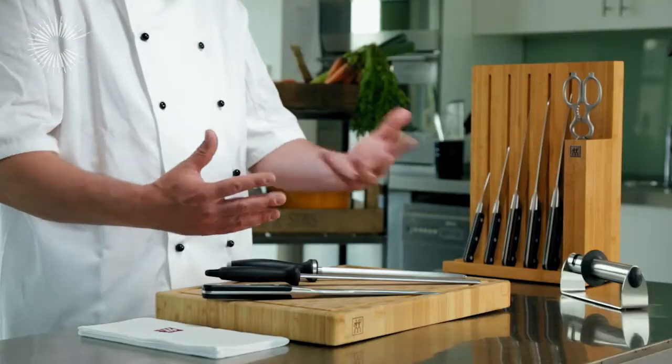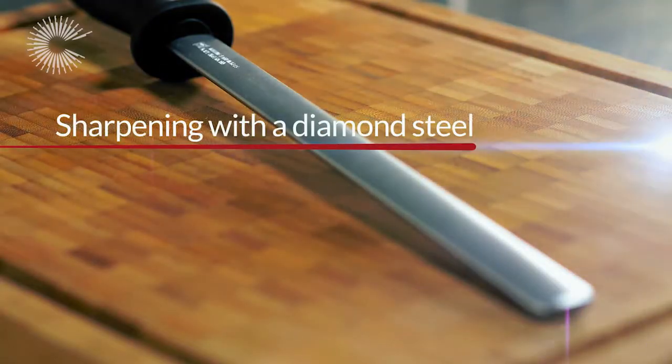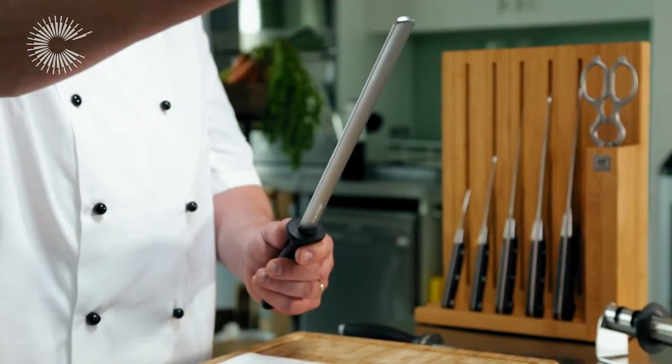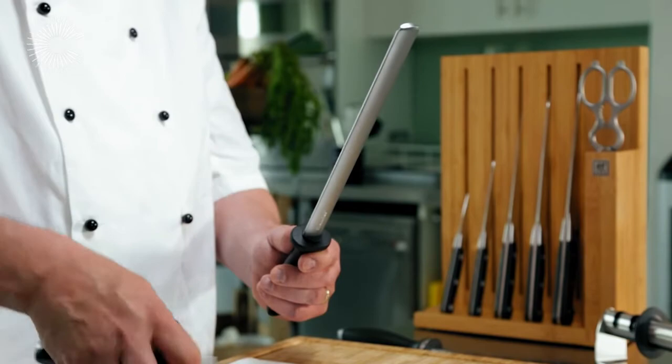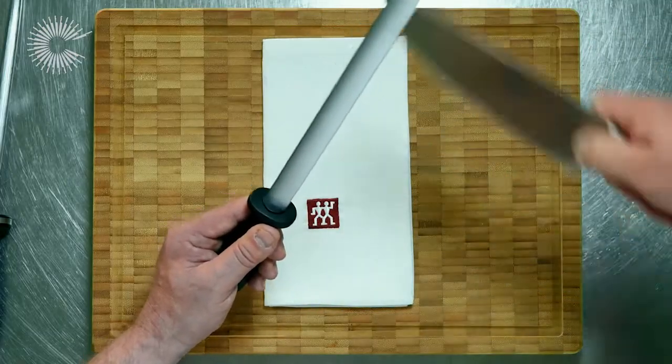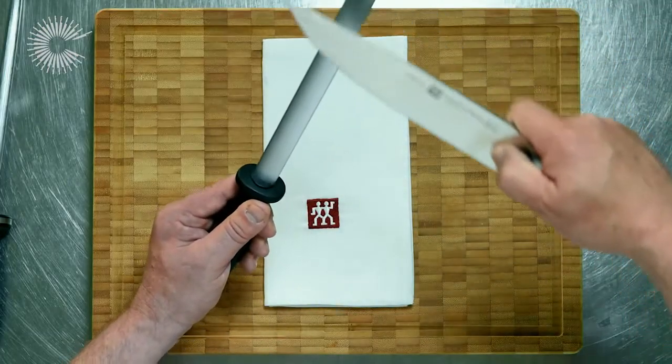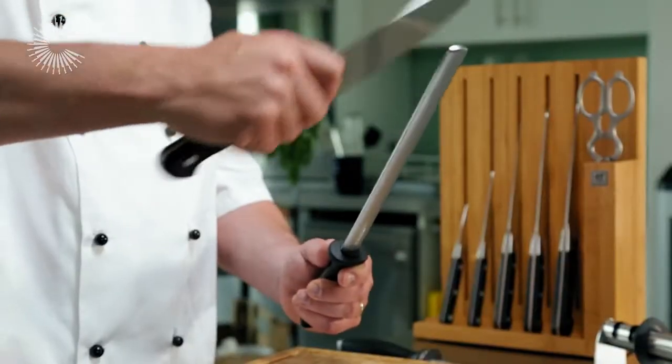To get into a regular pattern for sharpening is really important. A lot of people would use the steel this way up, bringing the knife down either side. This way you'll find it very difficult to find your angles.